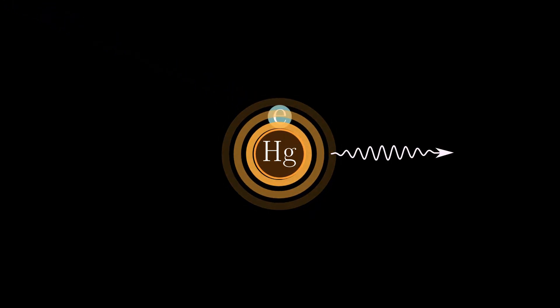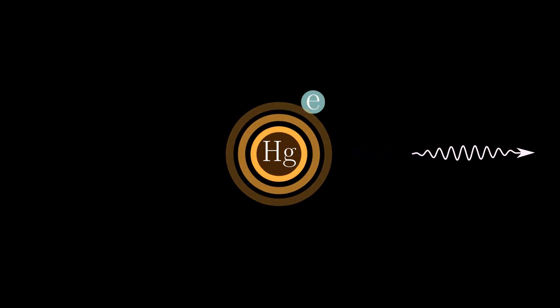If the electron has high kinetic energy, it excites the mercury atom when they collide. The mercury atom emits a photon. This is called an inelastic collision.